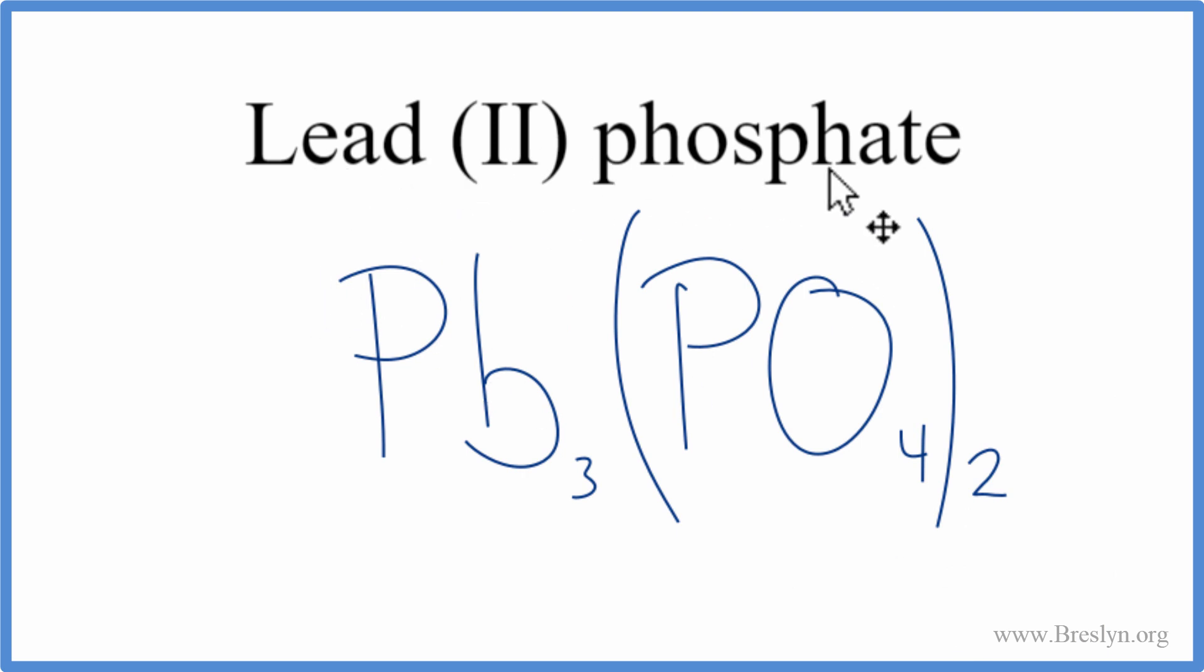Let's check our work to make sure we got this right. Lead has a 2+ ionic charge; phosphate had a 3-. I have two phosphate ions—two times 3- is 6-. And three of the leads—three times 2+ is 6+. So 6+ and 6- add up to zero. We have a net charge of zero, so we're done. This is the correct formula for lead(II) phosphate.